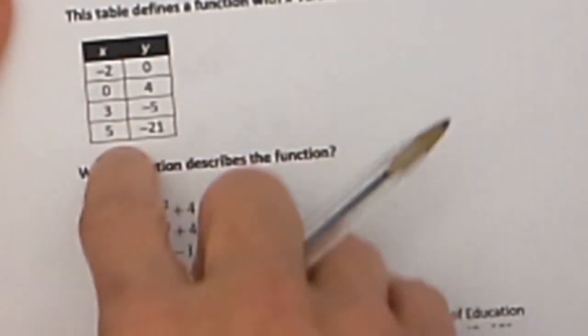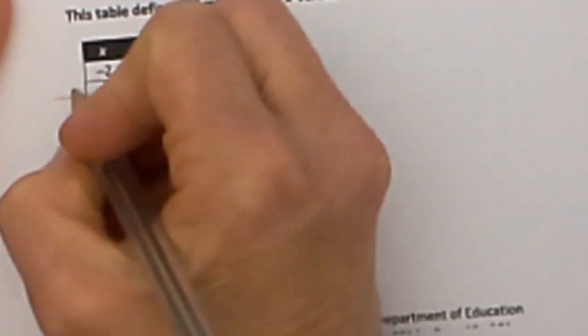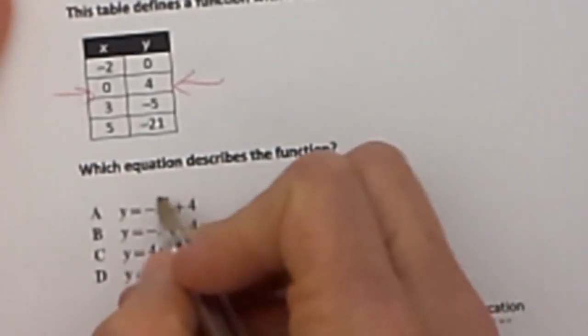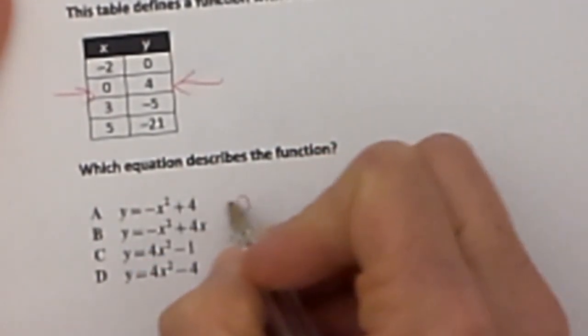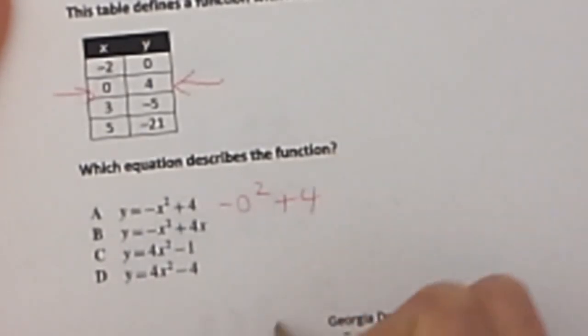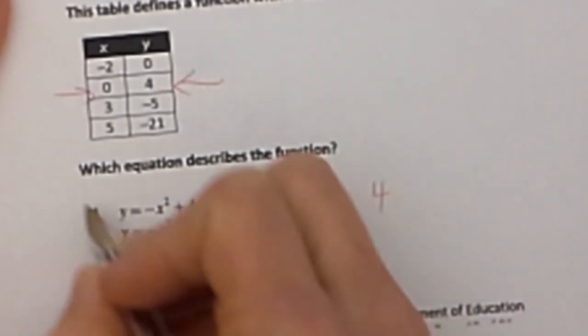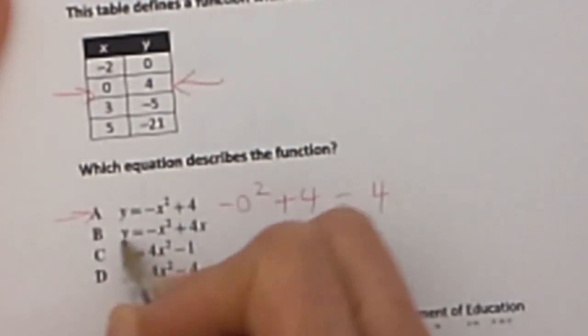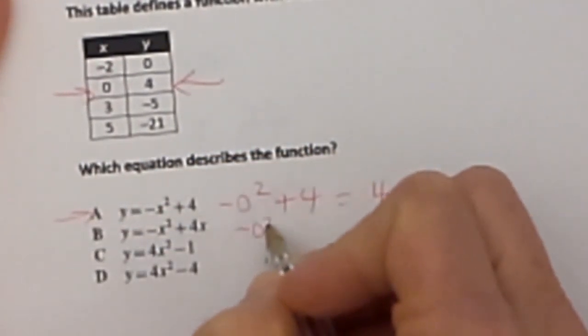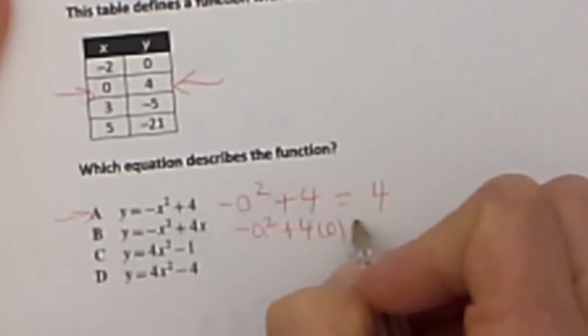What I need to do is just start plugging in values. All these values have to work in these equations where these are my inputs and these are my outputs. So I am going to look carefully and I am going to choose 0 because it is so easy to plug in. I am going to plug in when x is 0 and y is 4. Let's try that point and see if we can eliminate some of our choices. If I plug in 0 into the first function, what do I get out? I get out 4. So it could be that one.